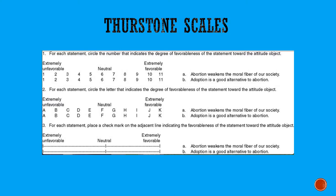So, Thurstone scales. Bear with me because it takes a little bit of time to explain this. This is one of the earliest types of attitude scales that was developed. You begin by generating a long list of statements about some kind of entity that can be evaluated. So in the example on this screen, there are statements about abortion — for example, 'Abortion weakens the moral fiber of our society' and 'Adoption is a good alternative to abortion.' You generate a large number of those statements and ask a large group of people to rate how positive or negative each statement is.